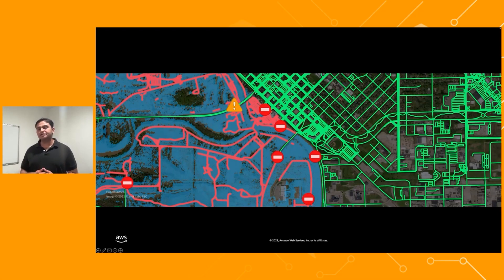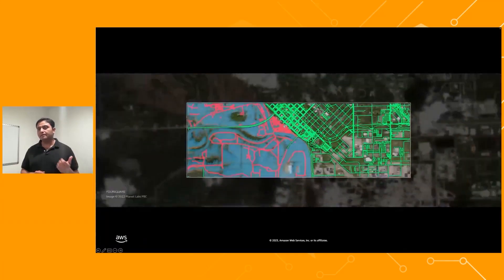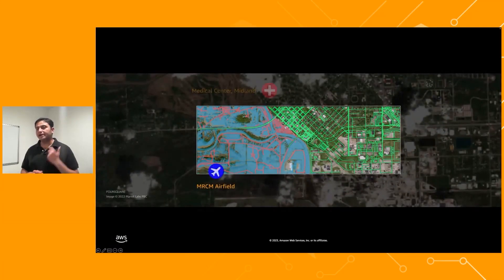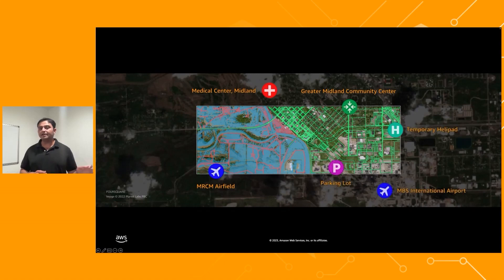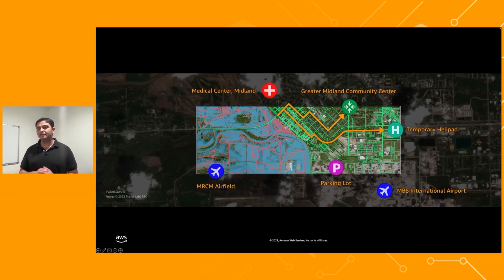I can also add point of interest data from Foursquare to see where the nearest hospitals, medical facilities, and airports are. For example, I can see that MRCM airfield on the left is surrounded by water, while the temporary helipad and international airport are still accessible. I can provide this information to first responders so that they can deliver aid, emergency supplies, and evacuate people.